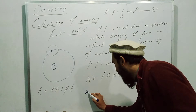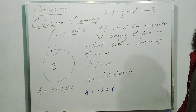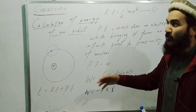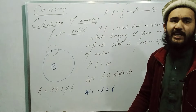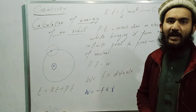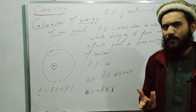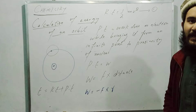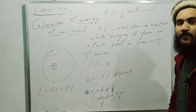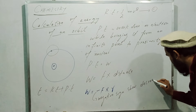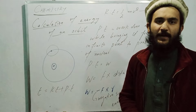Now, one important thing to remember: we apply a minus sign with the force here, and the distance is r. The minus sign is used because we are bringing the electron from an infinite point to near the nucleus — from higher energy to lower energy, meaning its energy is decreasing. So this negative sign shows a decrease in energy.